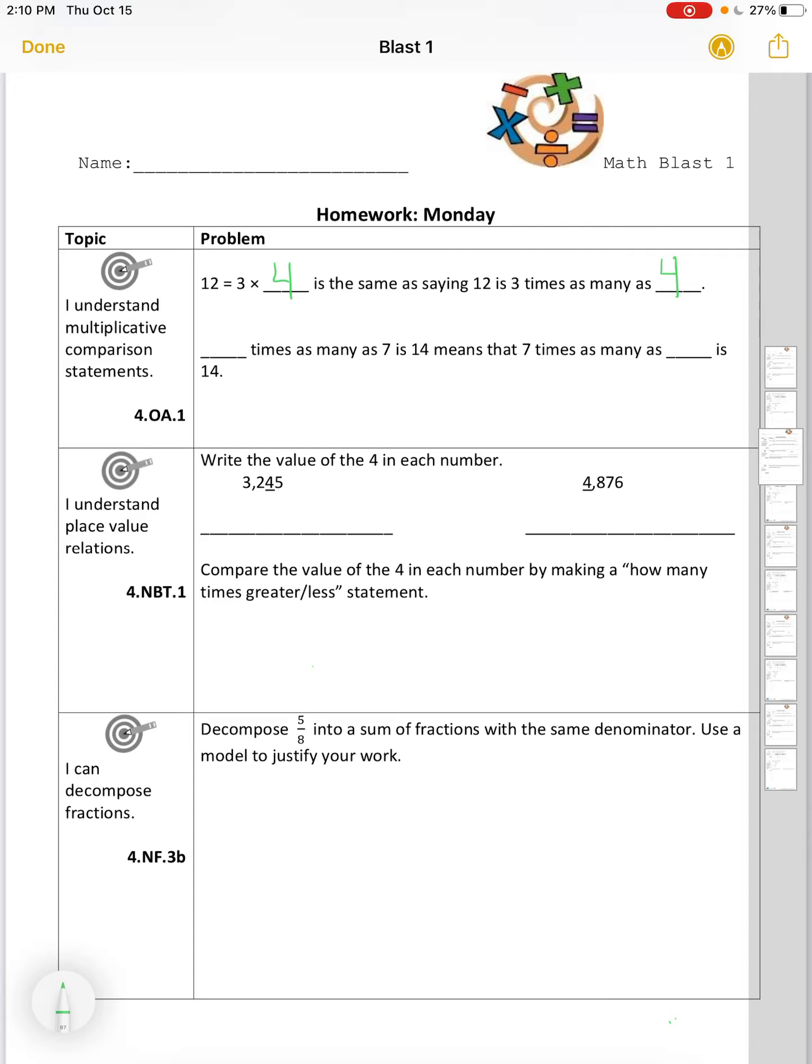Well, I know two groups of 7 is 14. So 2 times as many as 7 is 14 means that 7 times as many as 2 is 14.